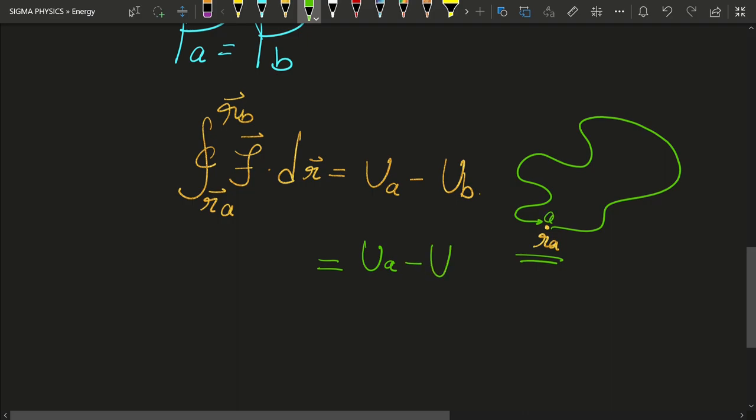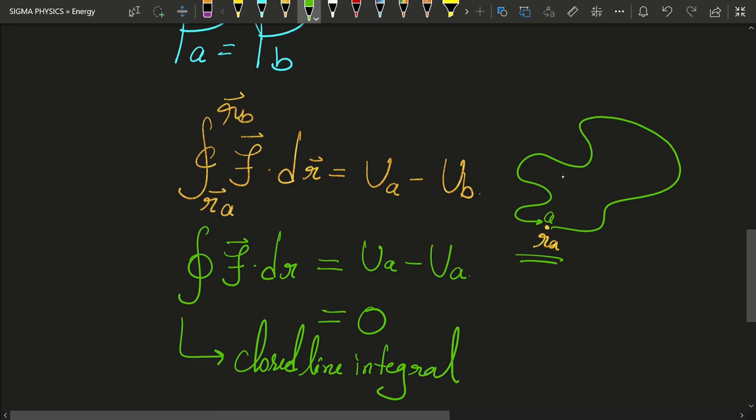I will get Ua and Ub is the same point. That is, if initial and final points are the same, you get Ua minus Ua, which is zero. And in fact, this integral for a closed path can be written something like this. This is F dot dR. This is known as a closed line integral. That simply means an integral around a closed path.